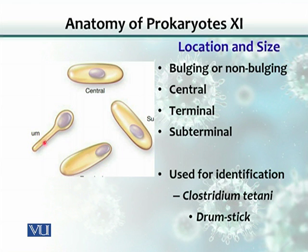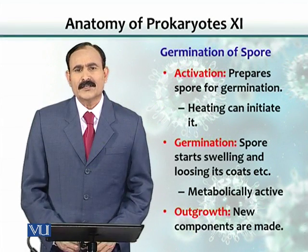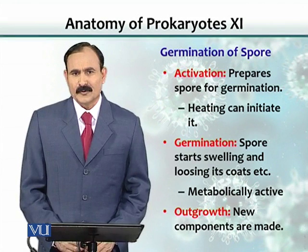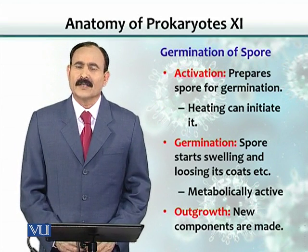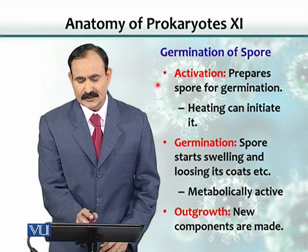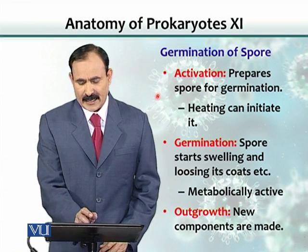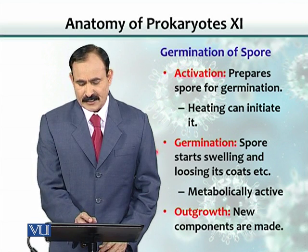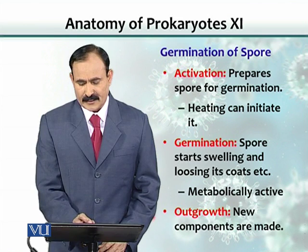This here is called a drumstick appearance. It is a very useful character of Clostridium tetani, the drumstick bacterium — it's very easy to identify. When conditions are favorable, the same spore gets back to life, passing through three different stages: activation, then germination, and then outgrowth.